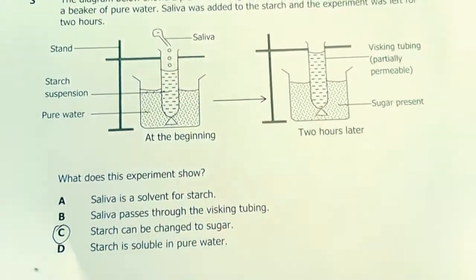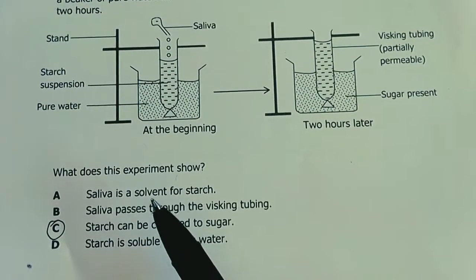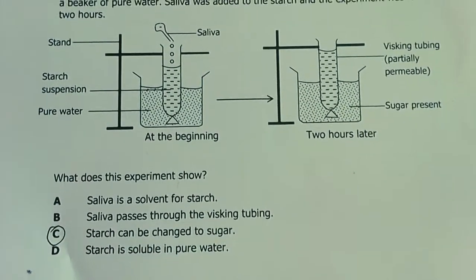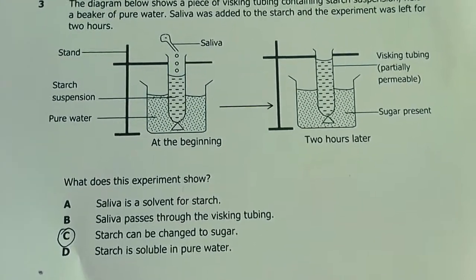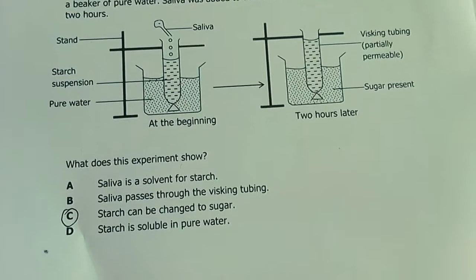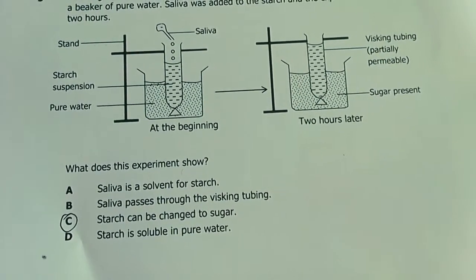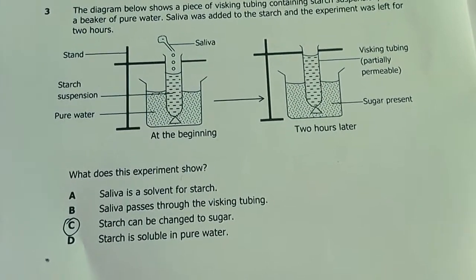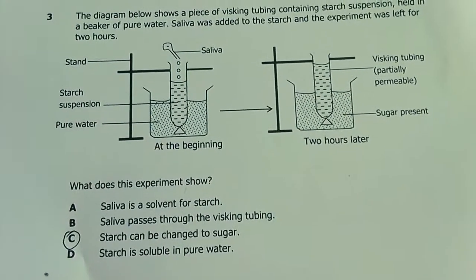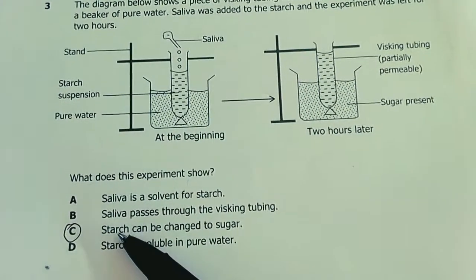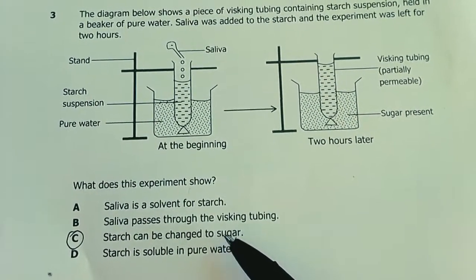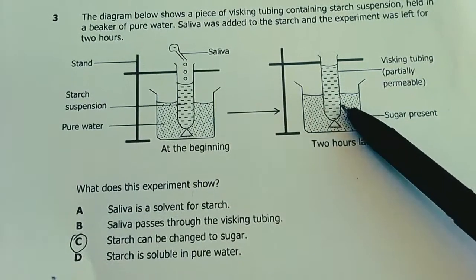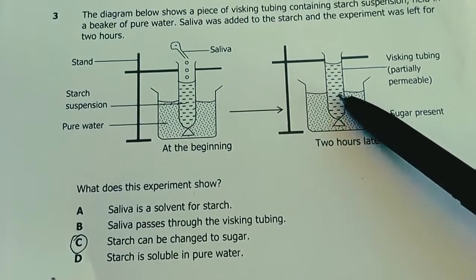Saliva breaks down starch. Saliva is a solvent for starch? No. Saliva passes through visking tubing? No. Starch is soluble? No, starch is actually insoluble in water. The effect of osmosis is more efficient when particles are very small, in solutions not suspensions. The moment starch was broken down by saliva to form small sugars, then osmosis took flight. Our answer is C: starch can be changed to sugar. This is at another level. The fact that starch was changed to sugar, osmosis took place, therefore water entered the more concentrated solution and the volume increased.